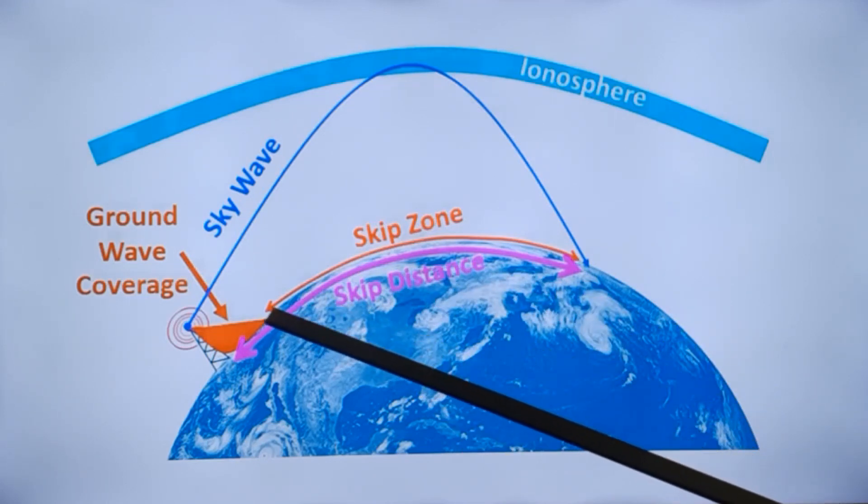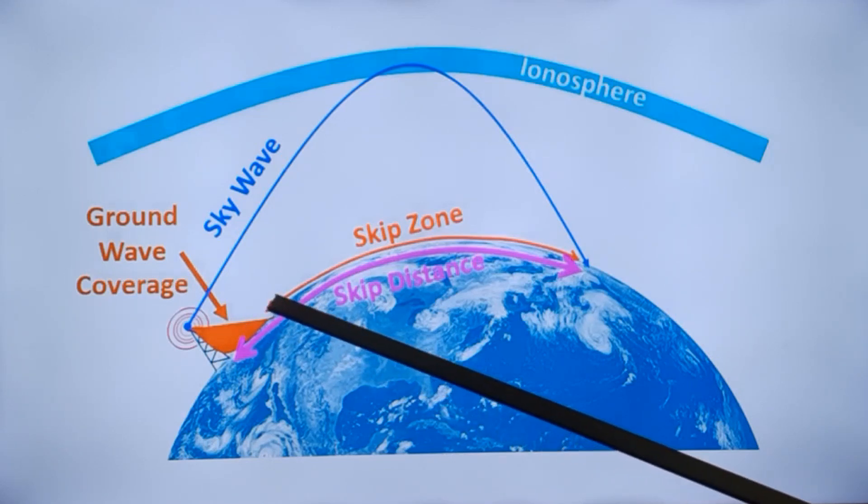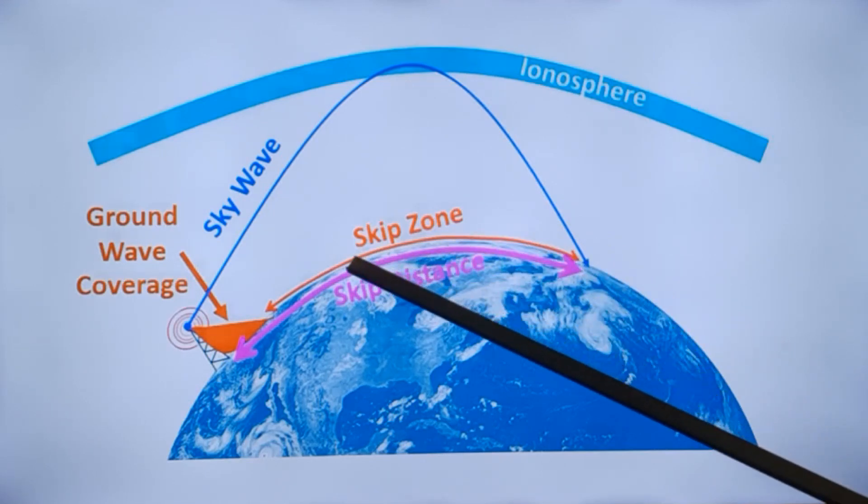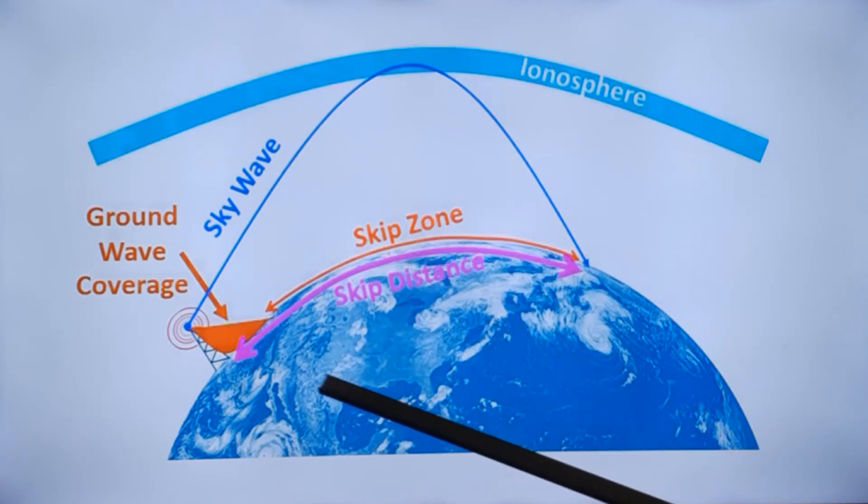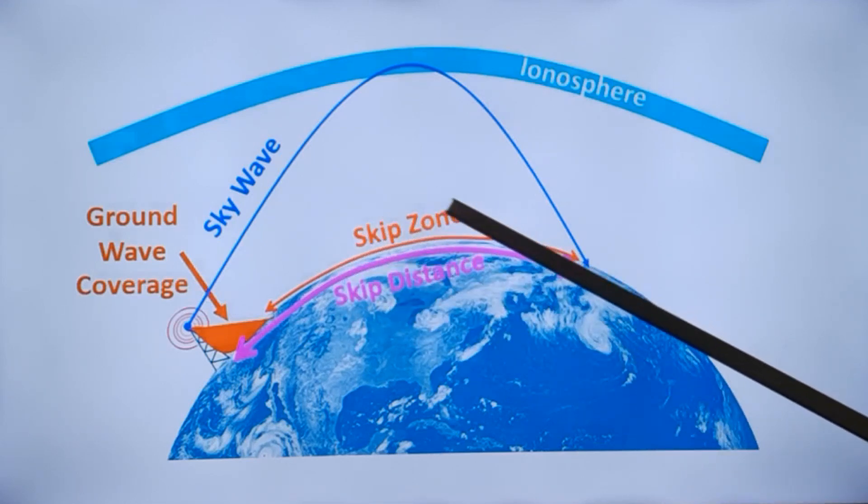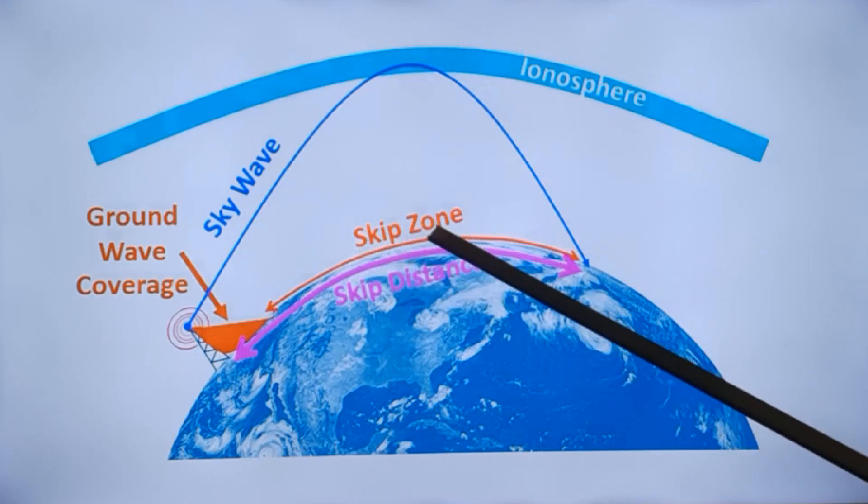The distance between the end of the ground wave propagation and the place where the nearest skip of the sky wave occurs is known as skip zone. The importance of skip zone is that if you have a radio here, nothing will be heard in this region. This is more when the frequency increases.